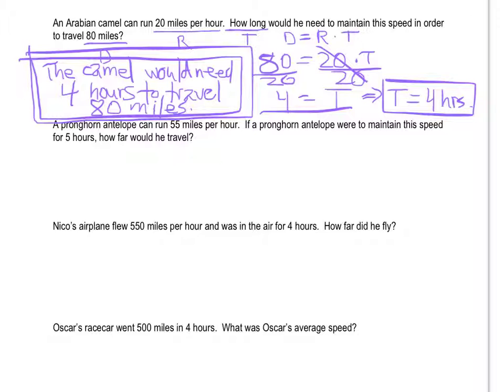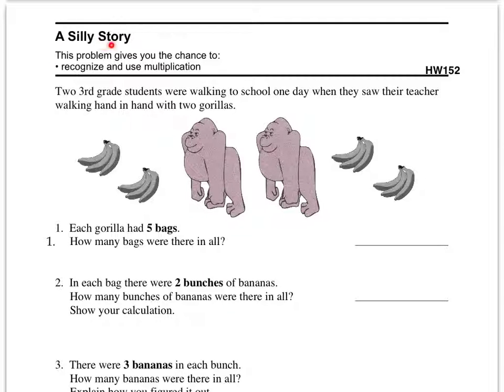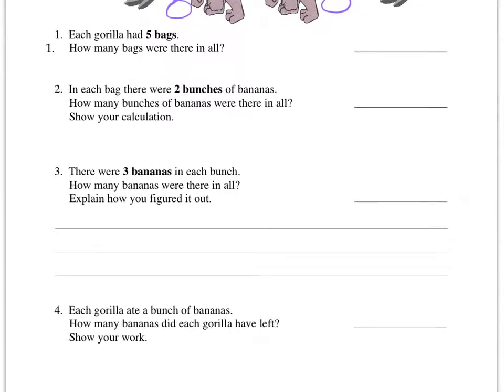We're going to go ahead and move over to the other side now. Here we are on the other side. A silly story. And let me tell you, a very silly story it is. It says two third grade students were walking to school one day when they saw their teacher walking hand-in-hand with two gorillas. Each gorilla had five bags. If it helps, draw the bags. I'm not a good bag drawer, so I'm just going to draw the bags for my gorillas. Five bags. Each gorilla had five bags. How many bags were there in all? Well, if you drew it, then you can count them. You could also use multiplication. I'm not going to do it for you. I expect you guys to do it on your own.